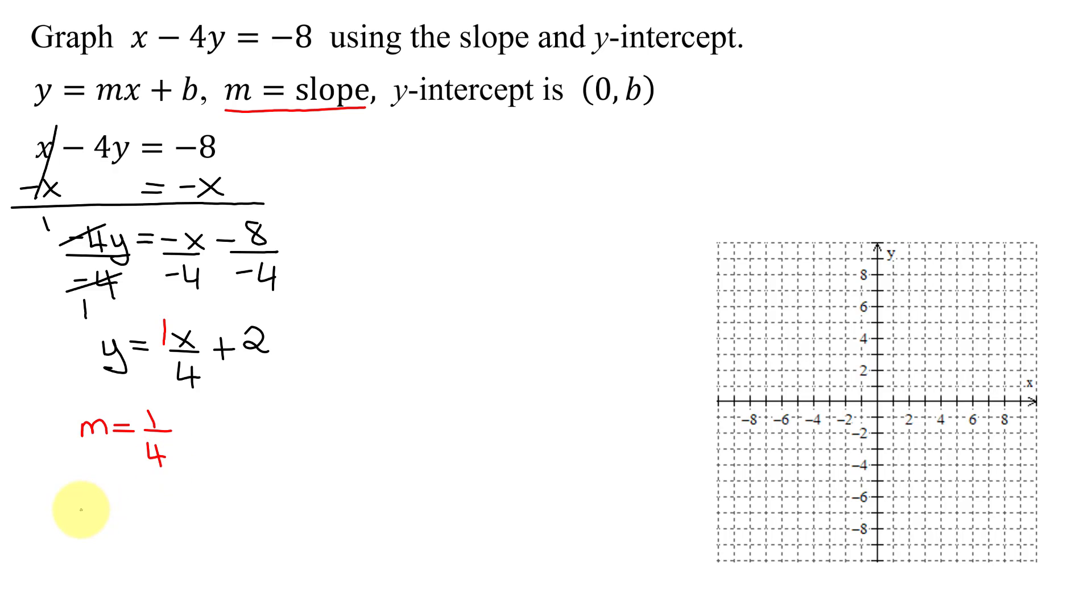and then the y-intercept is 0 comma b, so it's going to be 0 comma, what's b in this case, 2.